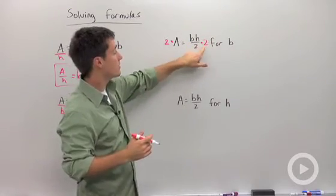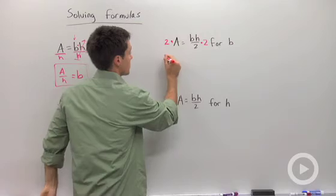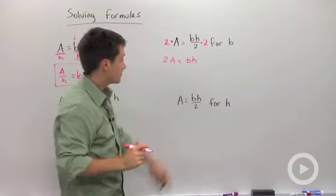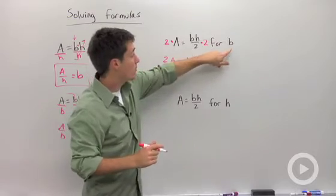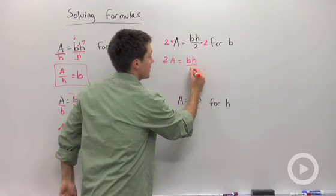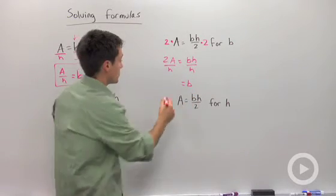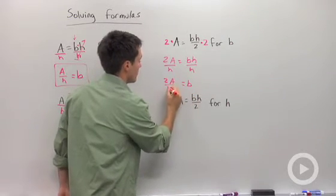So we have 2 times a is equal to b times h. I have not finished solving for b because I have to divide by h. So base is equal to 2 times the area divided by the height.